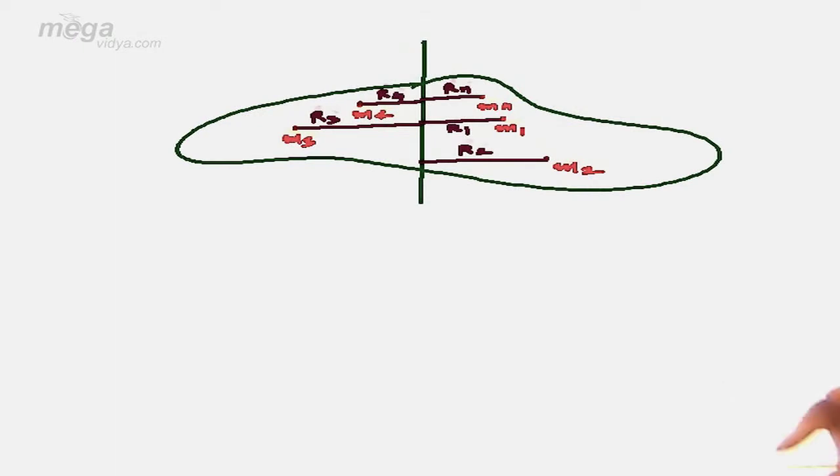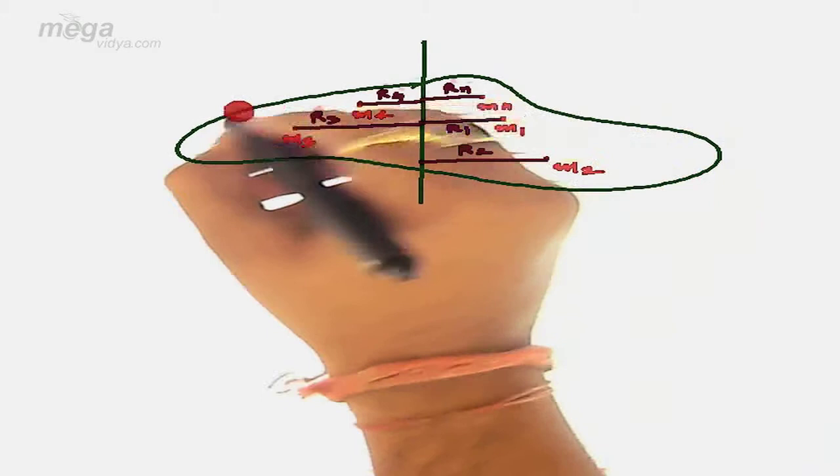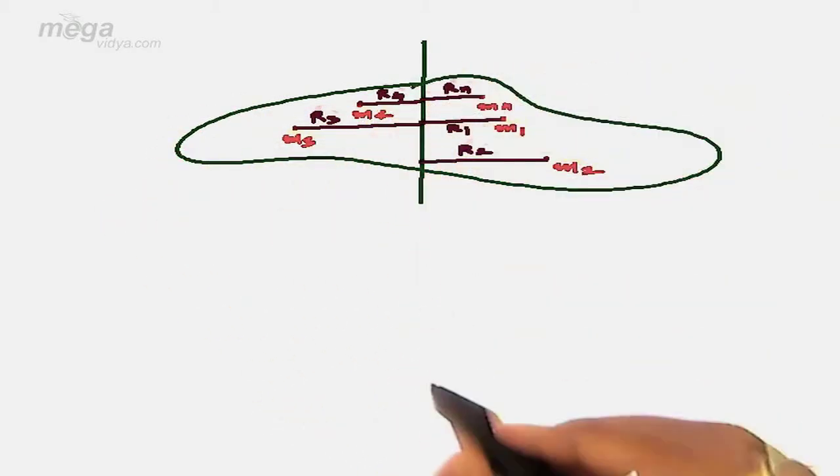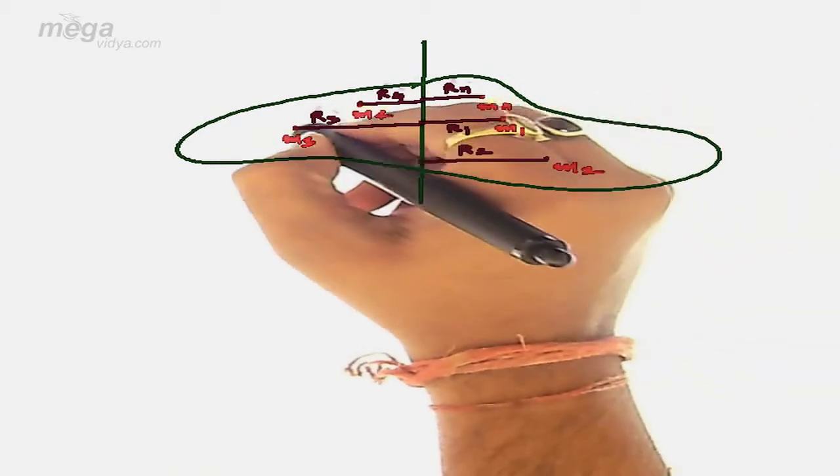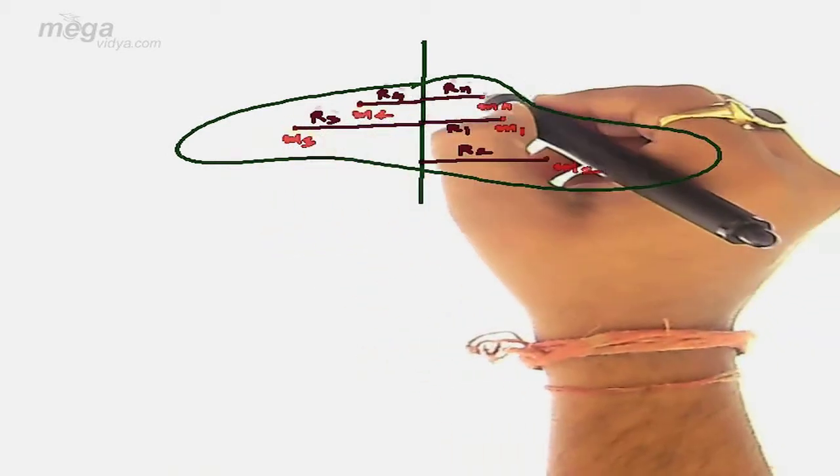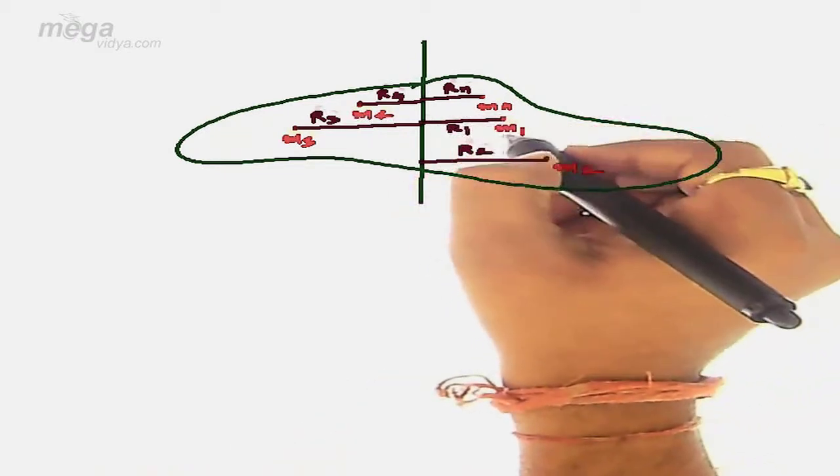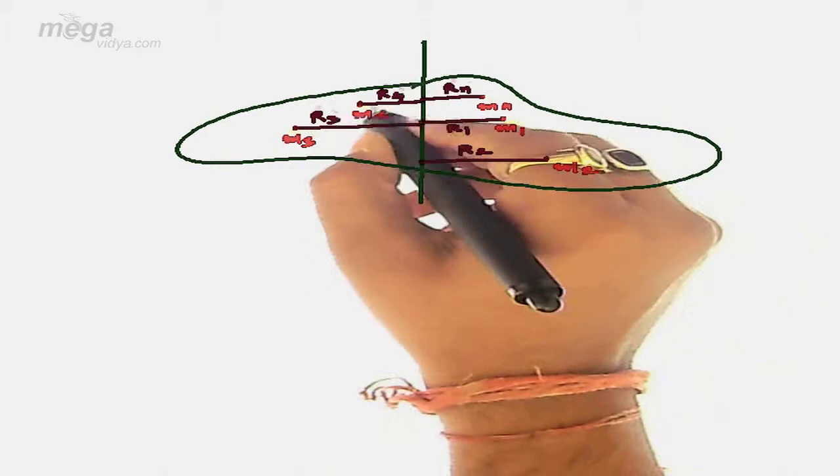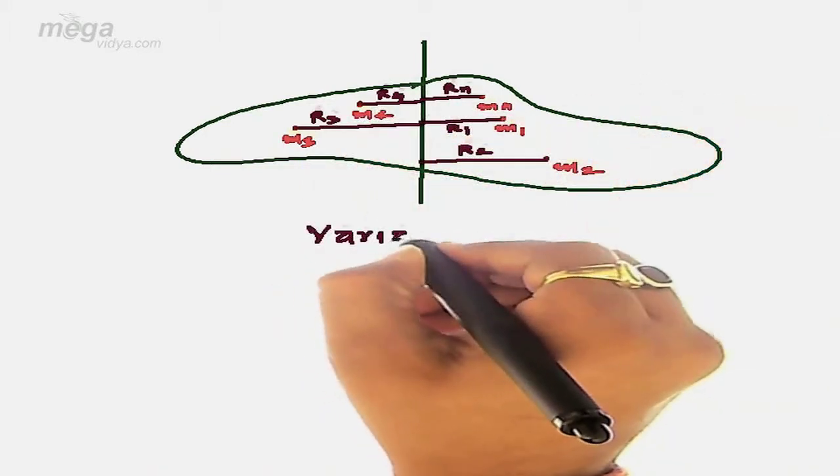In order to explain my point, let us take an illustration. Let us consider a rigid body as seen in figure such that different masses m1, m2, m3, m4, mn etc. are placed at distances r1, r2, r3, r4 and rn respectively. The system is called variable mass system.